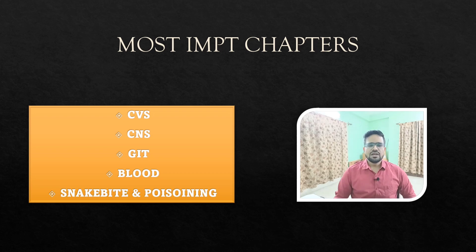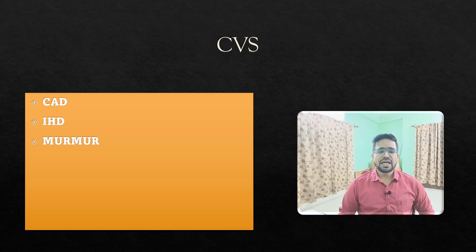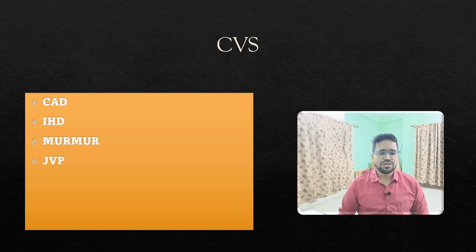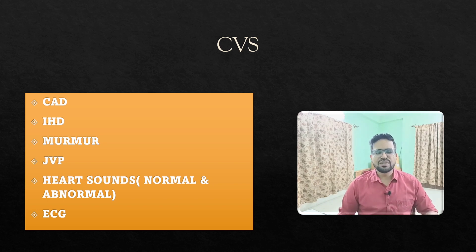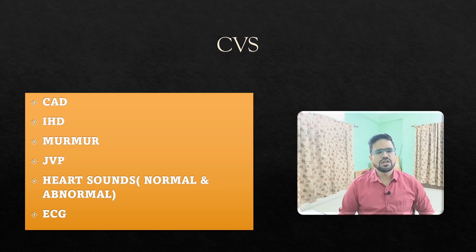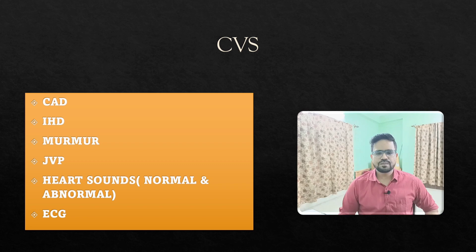For the CVS chapter, the most important topics to revise before the exam are: coronary artery disease, ischemic heart disease, different types of murmurs — revise these carefully as they are asked repeatedly — jugular venous pulse (JVP) and related clinical questions, heart sounds both normal and abnormal, and ECG. Murmurs, JVP, heart sounds, and ECG will definitely come this year as they've been repeatedly asked. One question from each of these six CVS topics is very likely.